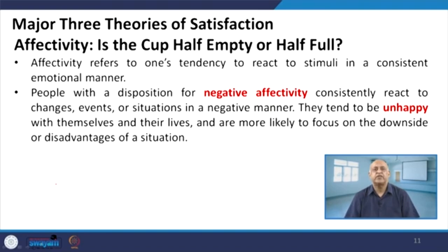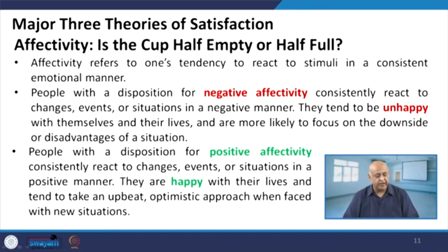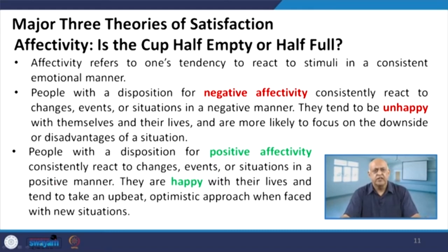I always give the example: whenever we travel and at the platform we find children coming from poor families — they are laughing, playing, and happy — and the child sitting in first AC is not happy. It means it is a tendency to react to stimuli in a consistent emotional manner. Negative affectivity means unhappiness — likely to focus on the downside or disadvantages of a situation. These are called fault-finding officers — FFO — who focus on activities where the person is weak, and as a result the person is demoralized and dissatisfied.